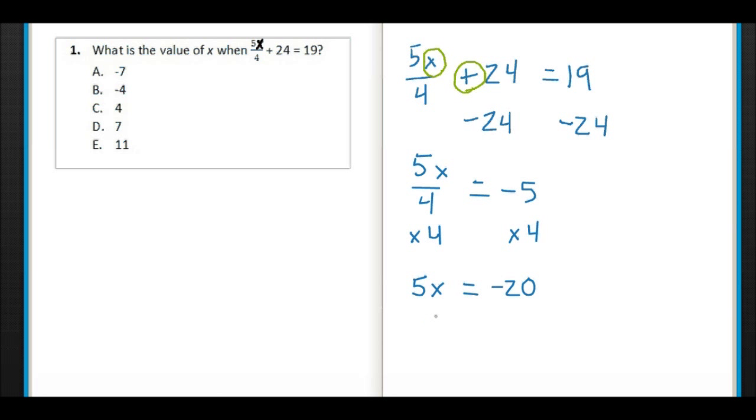So we get negative 20 over here. Now we've got multiplication on this side, and so since 5 is being multiplied by X, we'll just do the opposite which is to divide both sides. Remember you always have to do the same thing to both sides. So we'll divide by 5 and end up with X equals negative 4. That's good because B is negative 4.